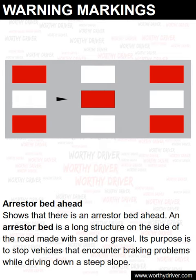Arrestor bed ahead. This marking shows that there is an arrestor bed ahead. An arrestor bed is a long structure on the side of the road made with sand or gravel. Its purpose is to stop vehicles that encounter braking problems while driving down a steep slope.